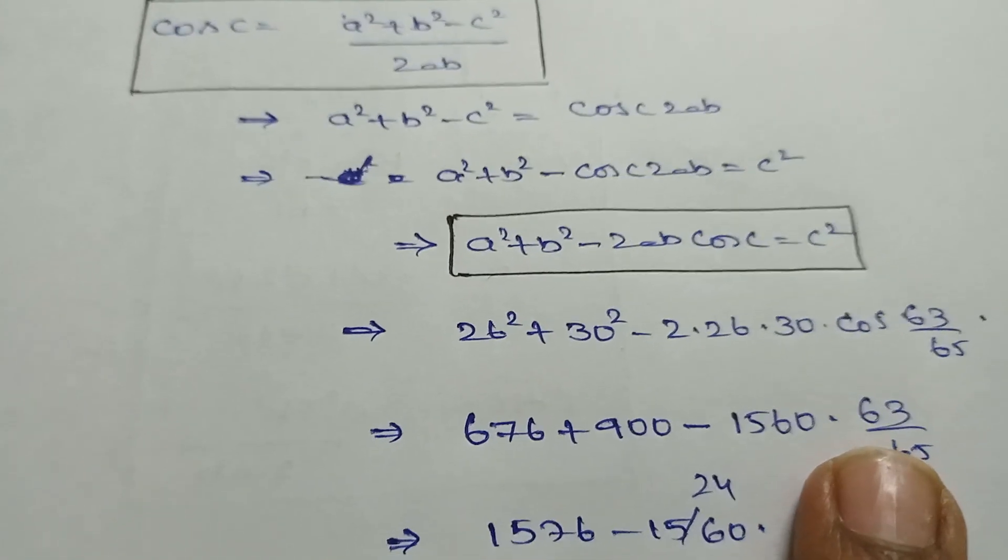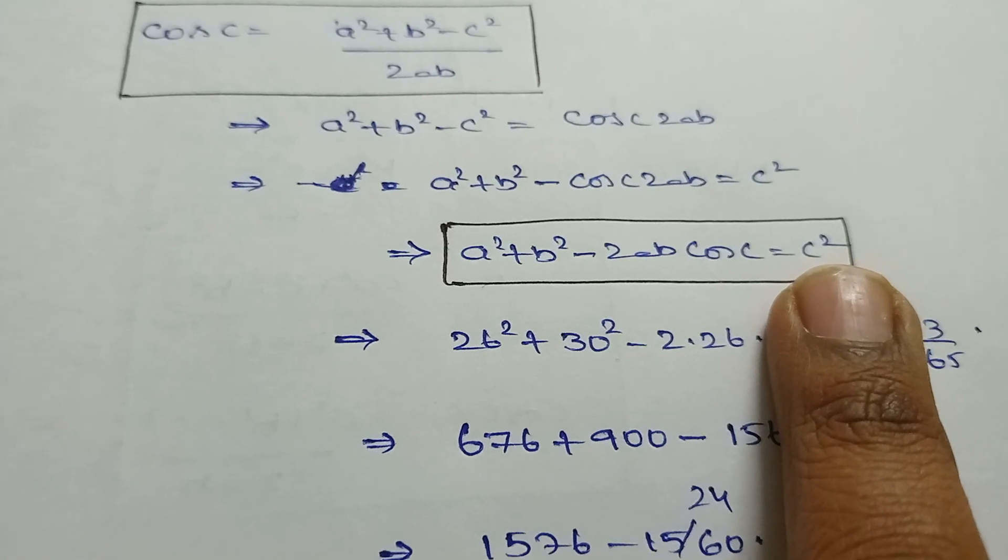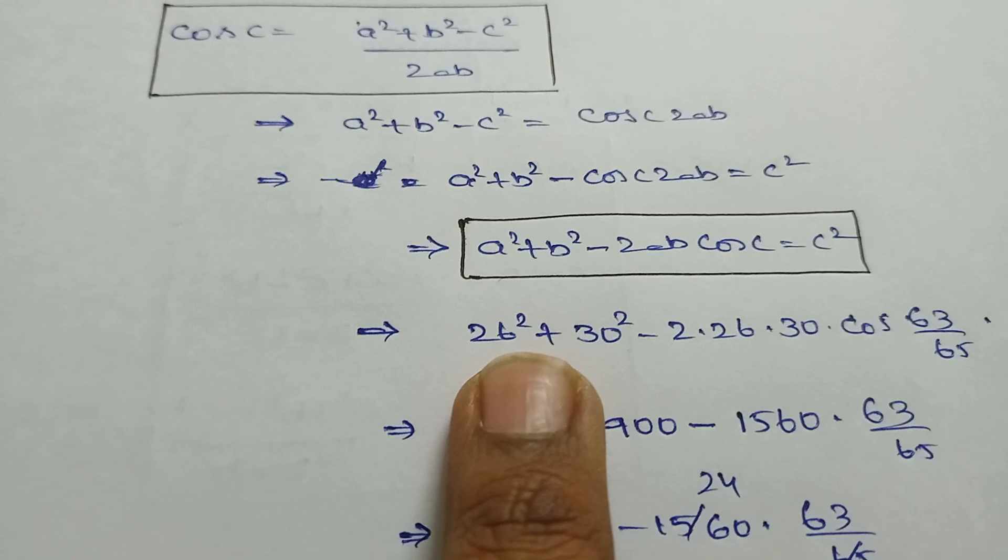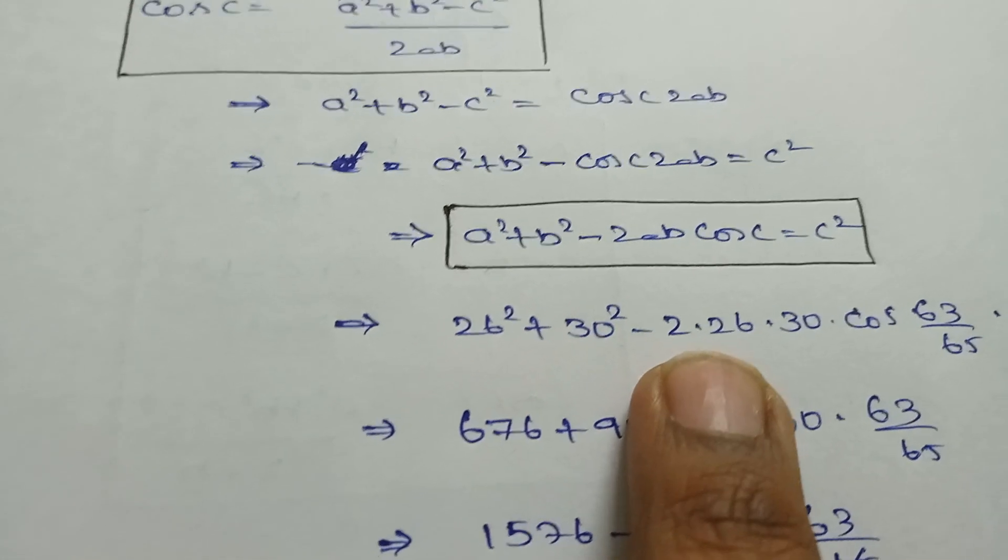If I substitute all the values in the last step, you can simplify c² to get c value. Now, a value is given as 26, it becomes 26². b is 30, so 30², minus 2 into a into b into cos 63/65.